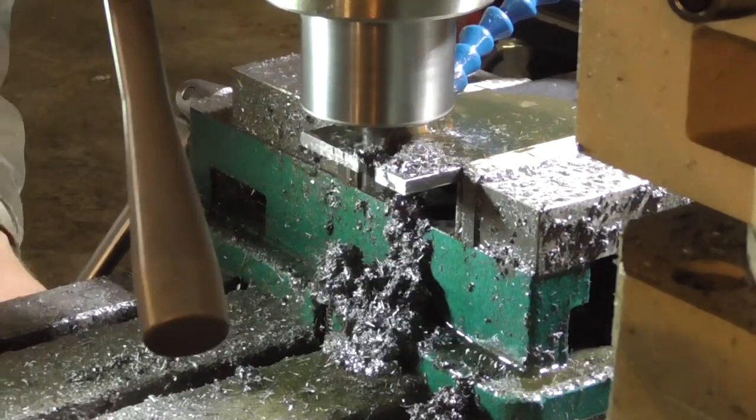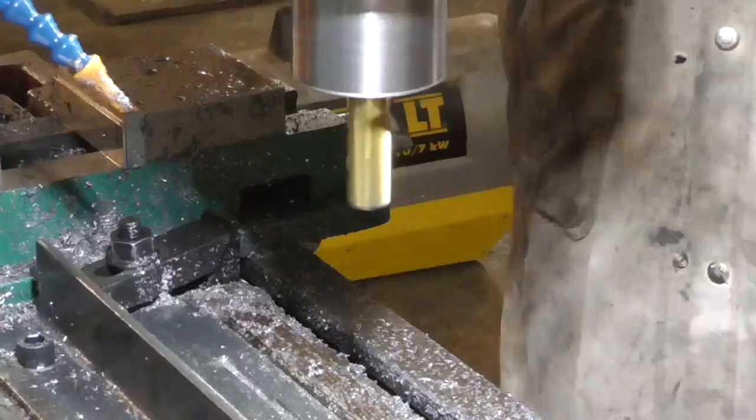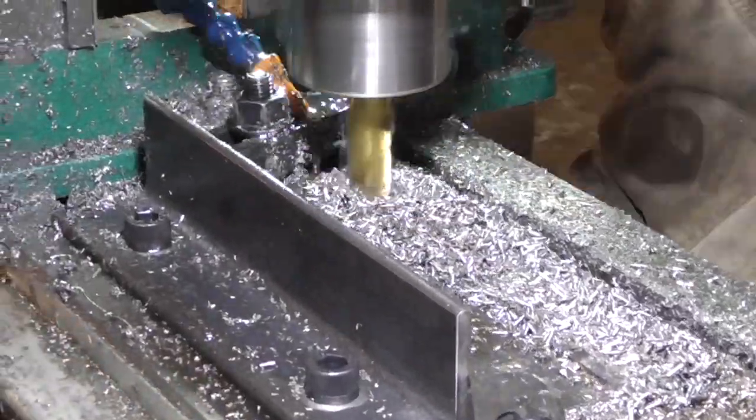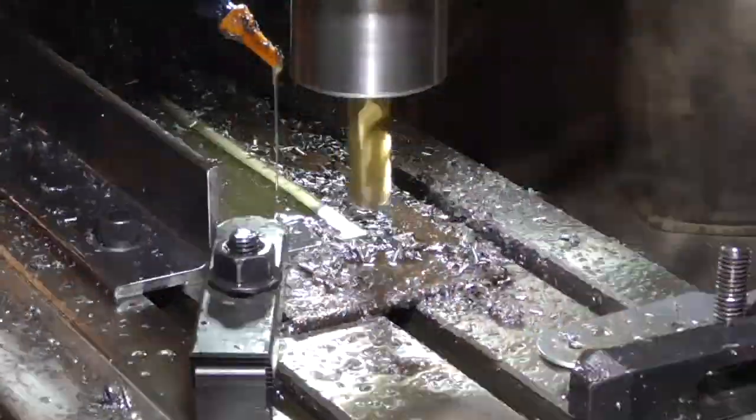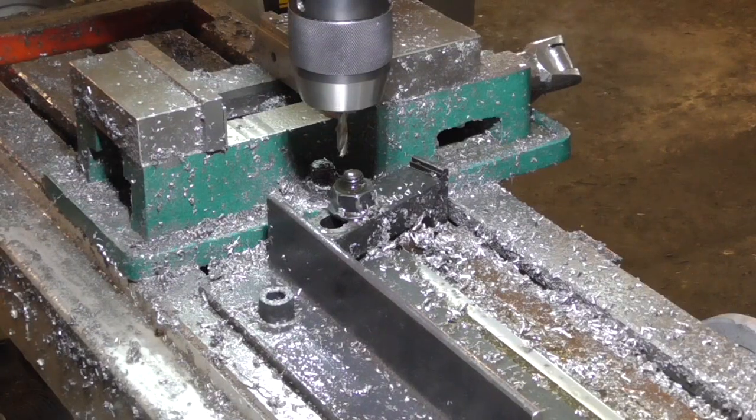I went with off-the-shelf linear ways for the Y and Z axes, but for the X axis, I built a custom carriage using track rollers in contact with angle iron rails integral to the metal frame I had built.